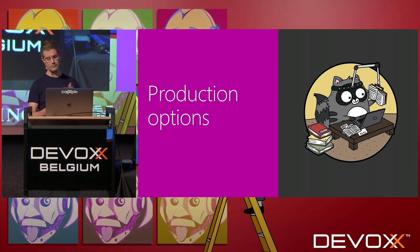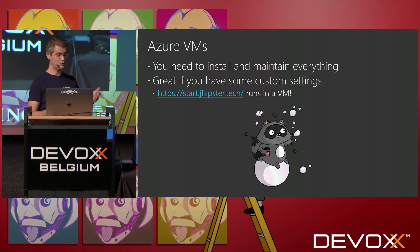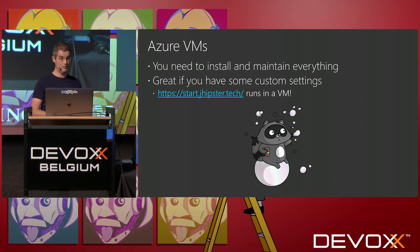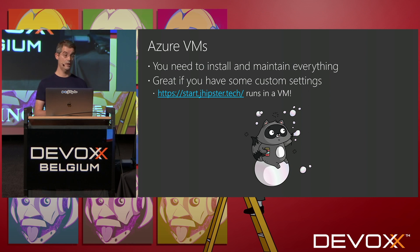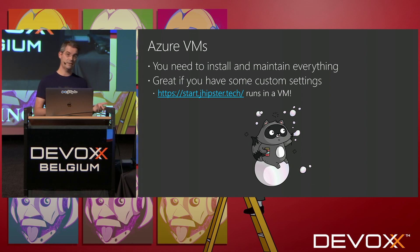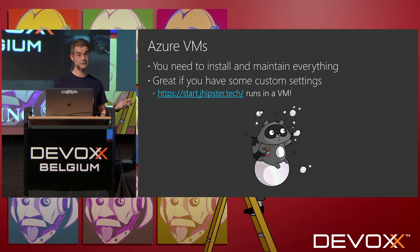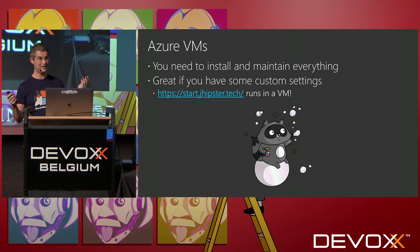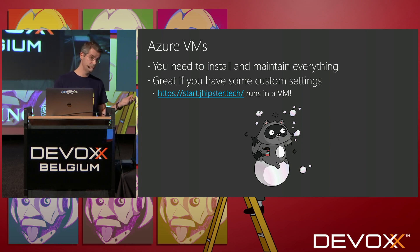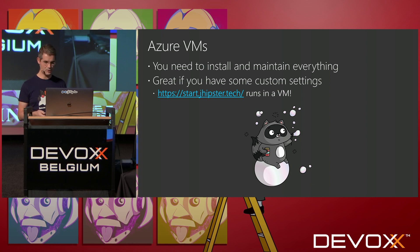Let's talk about production. We've got many options to run Spring Boot apps on Azure. The most obvious one is to use a virtual machine — you just buy a VM and run your code on it. It's pretty basic but it works really well. On JHipster, I maintain start.jhipster.tech which runs in a VM because I've got some specific stuff to do. Of course that means I have to maintain the OS, the JDK, and everything. If I want to scale it, it's up to me. So it's not perfect but it's a valid option.